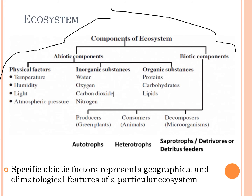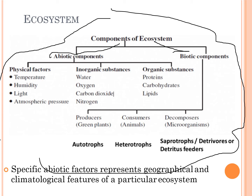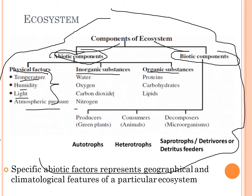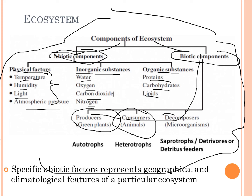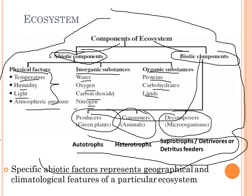The ecosystem components depend on abiotic (non-living) and biotic (living) factors. The abiotic components include physical factors such as temperature, humidity, light, and atmospheric pressure. The inorganic substances are water, oxygen, carbon dioxide, and nitrogen. The organic substances include proteins, carbohydrates, and lipids. The biotic components include producers (autotrophs), consumers (heterotrophs), and decomposers (saprotrophs).